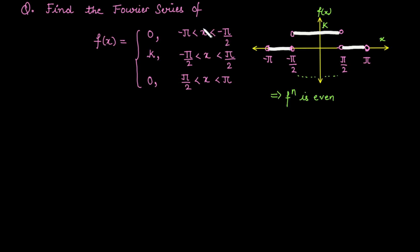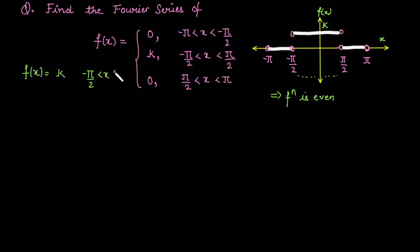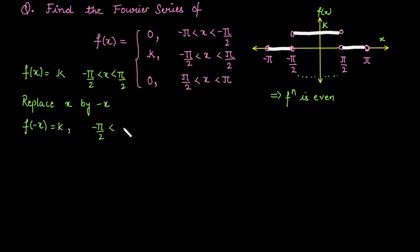We can verify mathematically. From minus pi to minus pi by 2 the function is 0, and by symmetry from pi by 2 to pi it is also 0. The critical interval is minus pi by 2 to pi by 2. Here the function is the constant k. We replace x by −x: f(−x) = k, and the interval becomes minus pi/2 ≤ −x ≤ pi/2.